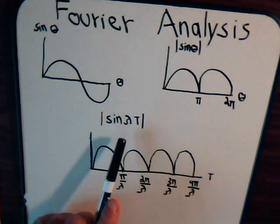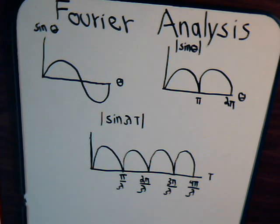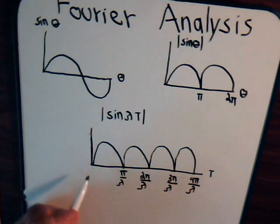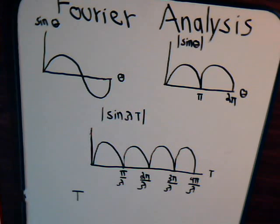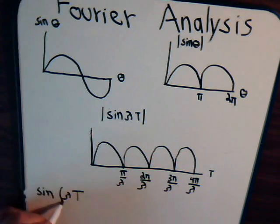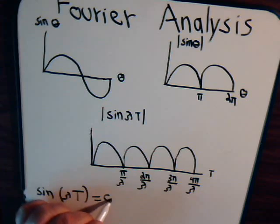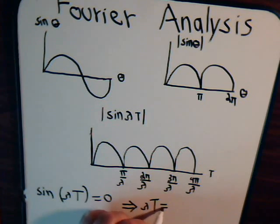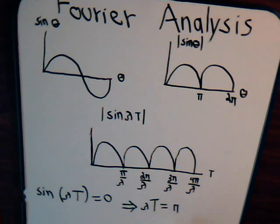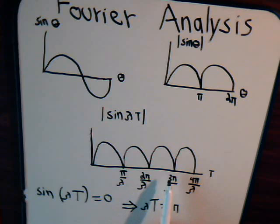The function here is the sine of λ times t. When you've completed one complete cycle, that's capital T, meaning the period. So the sine of λT equals zero. That implies that λT must equal π, or T equals π divided by λ. So the period is π over λ, and 2π over λ, and so forth.